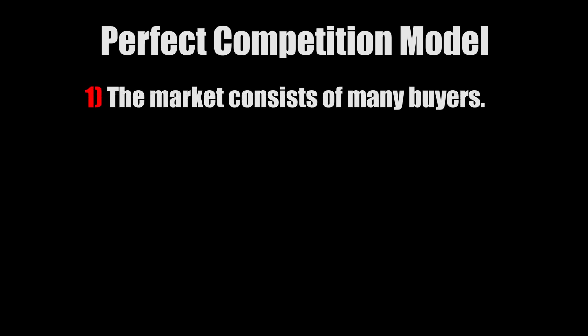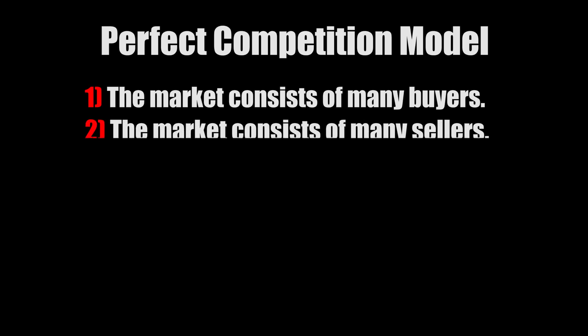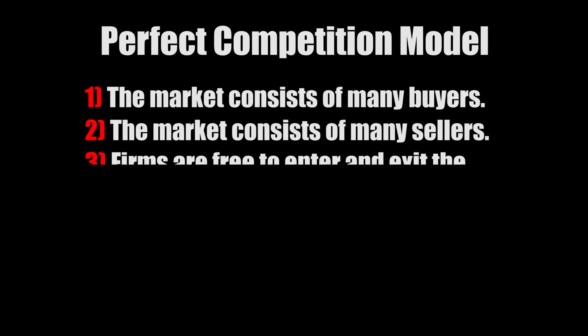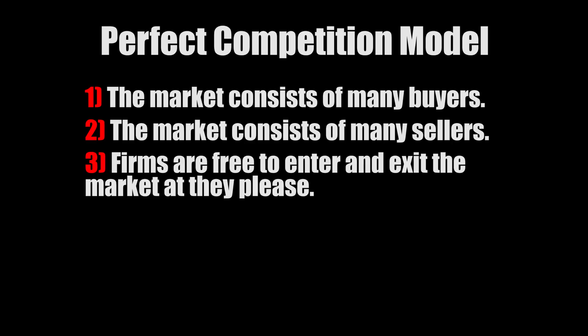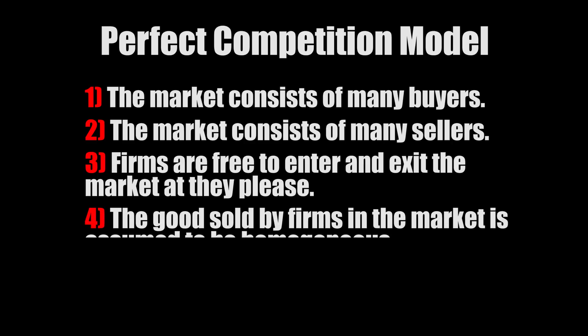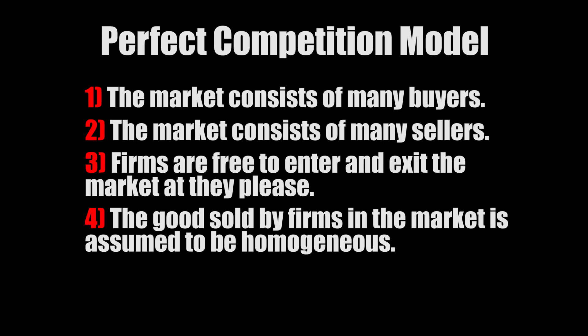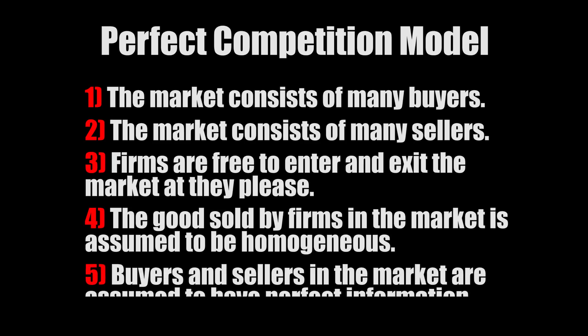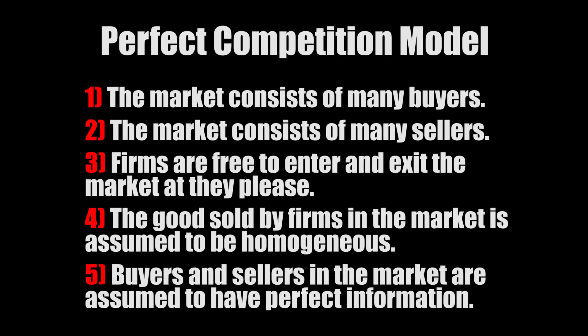In a nutshell, perfect competition is defined by five assumptions. First, the market consists of many buyers. Second, the market consists of many sellers. Third, firms are free to either enter or exit the market at any time. Fourth, goods sold are assumed to be homogeneous — in this case graphics cards, and we'll assume the multiple GPU variants and slight clock speed deviations are homogeneous. Fifth, buyers and sellers are assumed to have perfect information.